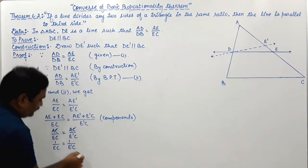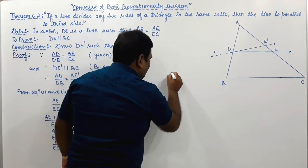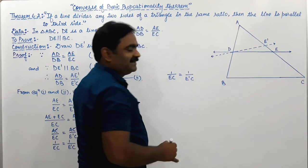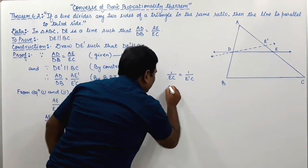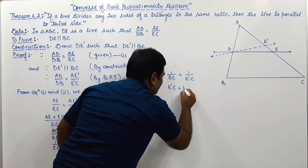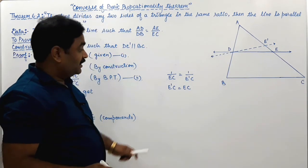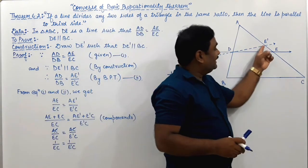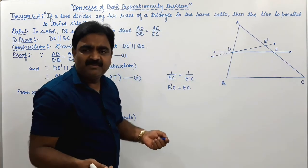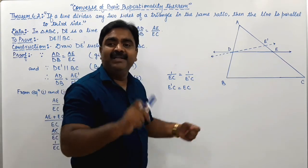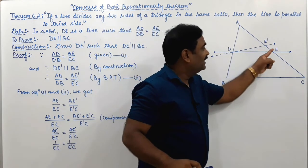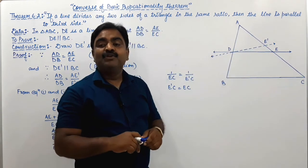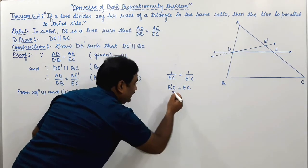So 1 upon EC equals 1 upon E'C. When you cross multiply, you get E'C equals EC. So E'C is equal to EC. How is this possible? This is possible only when point E' lies on point E.